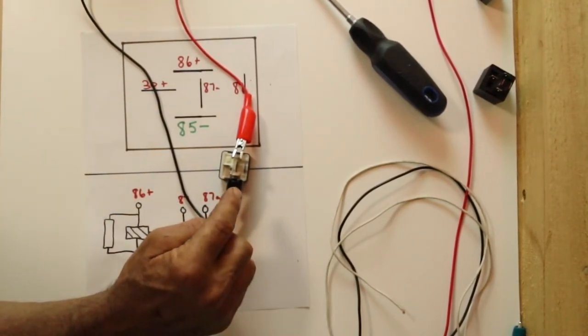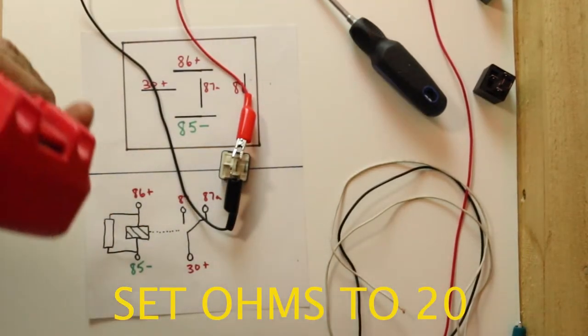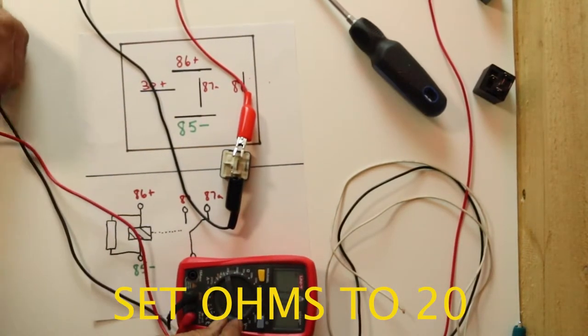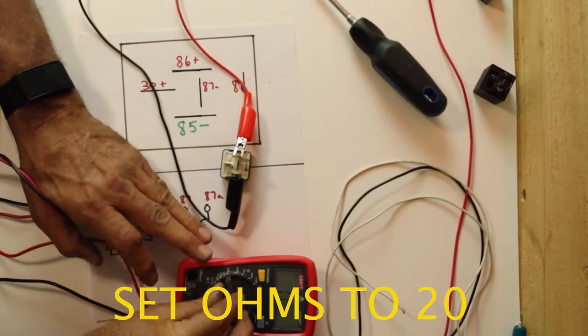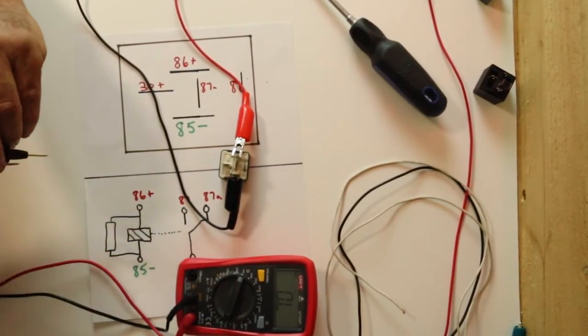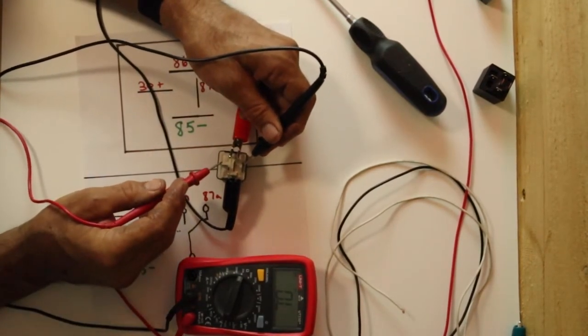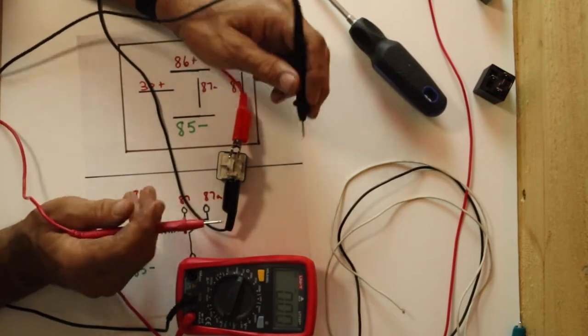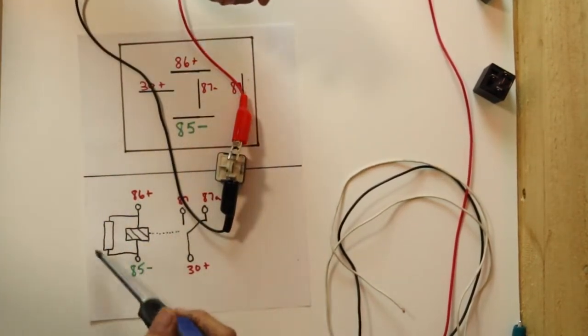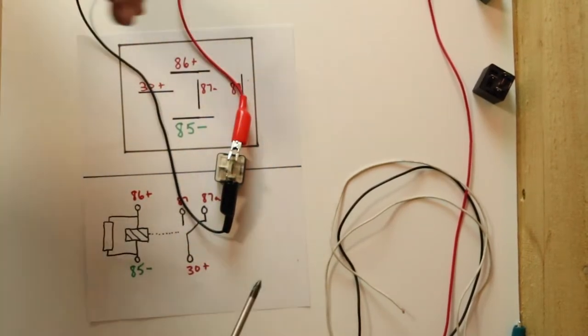Now we want to measure the resistance between pin number 30 and 87. Put your meter at 20, and when you measure the resistance, it should come out to be zero. And we do. So we know it's good. So we know once that circuit's activated, the gap between 30 and 87 is closed, and that should supply a voltage.